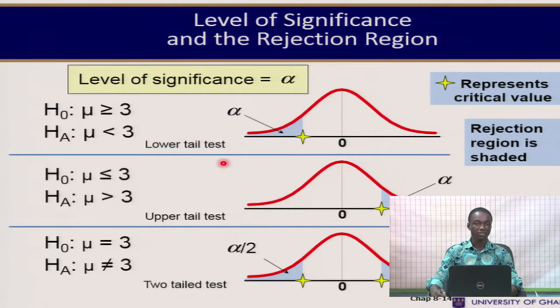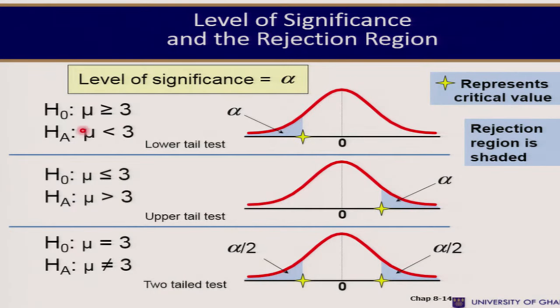In terms of the hypothesis formulation and test types, there are several ways to position the normal distribution curve. If the null hypothesis states that the population mean μ is greater than or equal to a certain value, this is a lower tail test, because the alternate hypothesis states that the population mean is less than the hypothesized value. The rejection region — the shaded region — is to the left on the normal distribution curve.